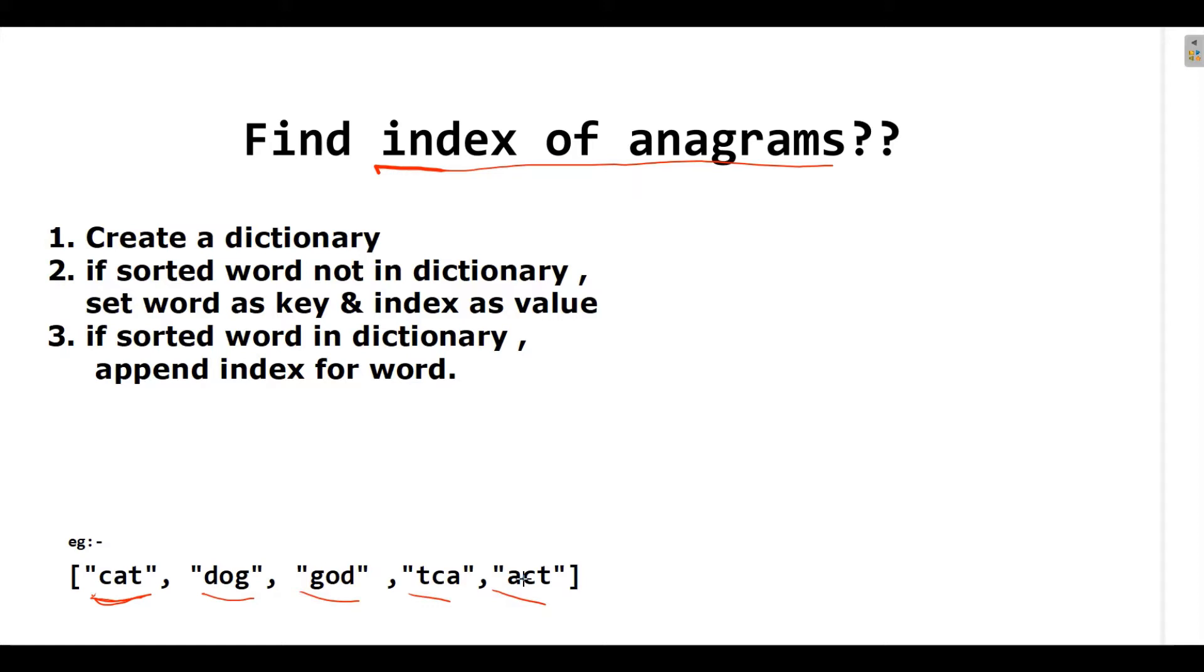How can I be able to take out the index for which they are having the same letters like 1, 2, 3, 4 and 5. I want the index of cat, TCA and act in one place and the rest two at one other place.